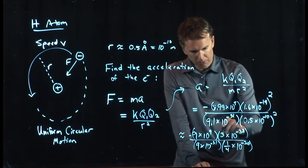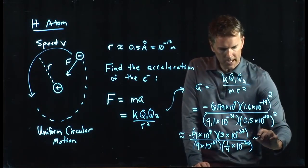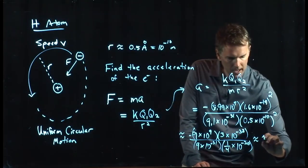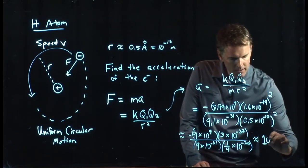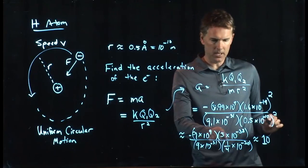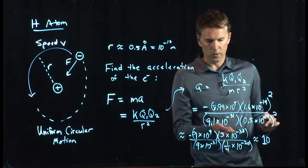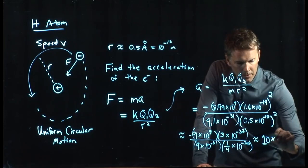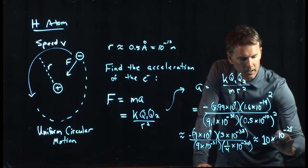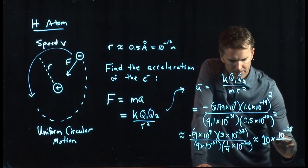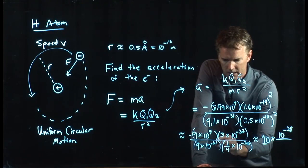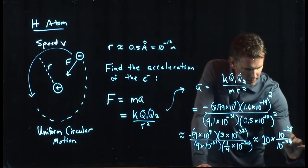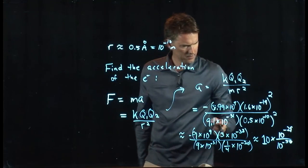Well, 9's cancel out. 3 divided by a quarter is the same as 3 times 4. We're a little bit heavy, so let's lower it to not 12, but how about 10. And we've got a 10 to the 9 and a 10 to the minus 38. That's a 10 to the minus 29. And then down in the bottom, we have a 10 to the minus 29. That's still on the screen over there.